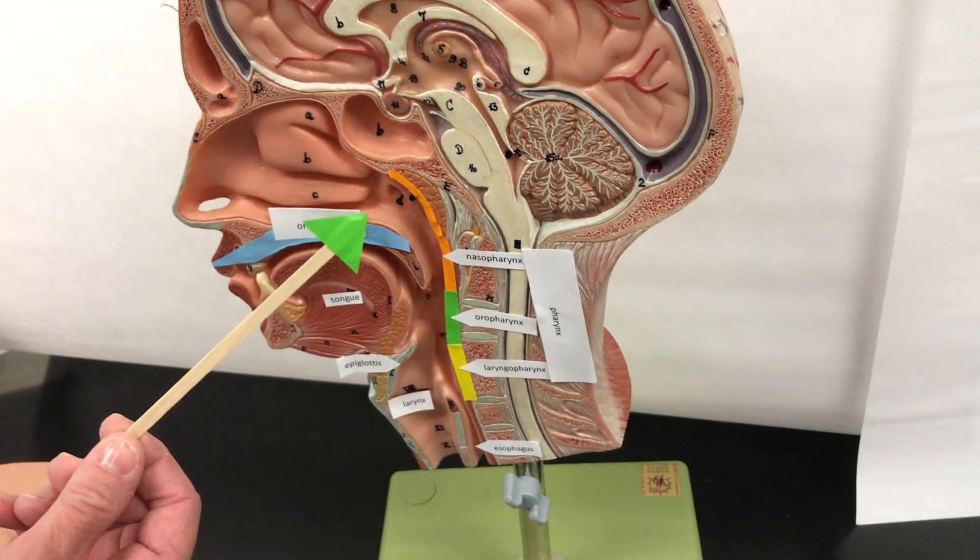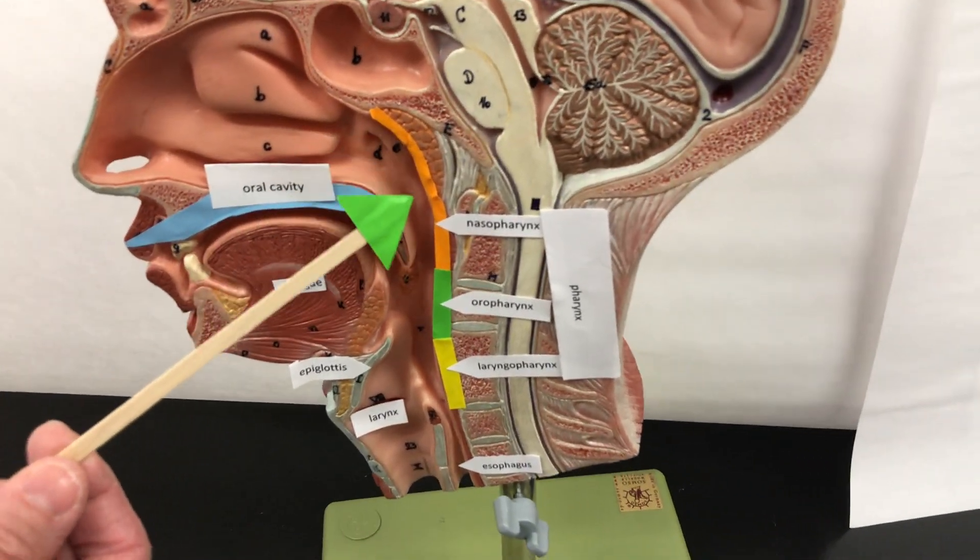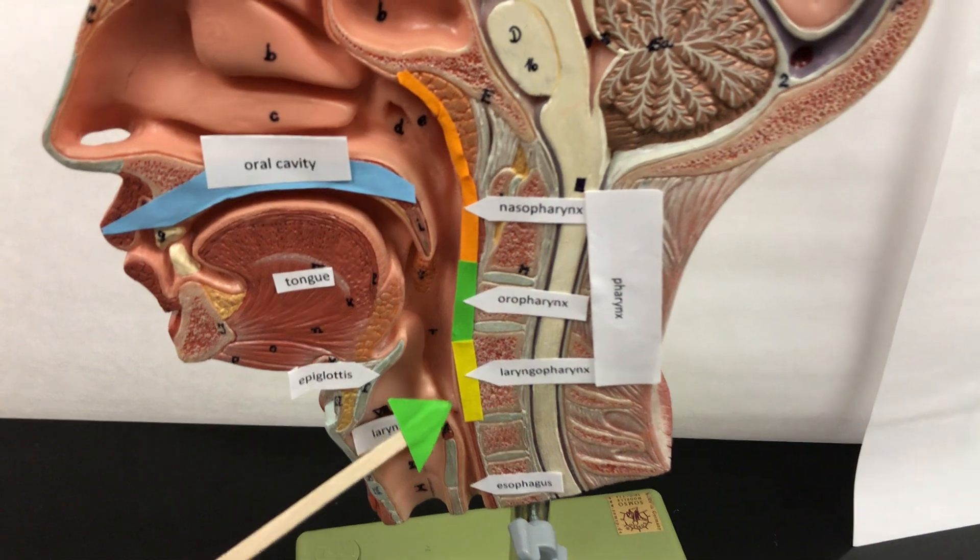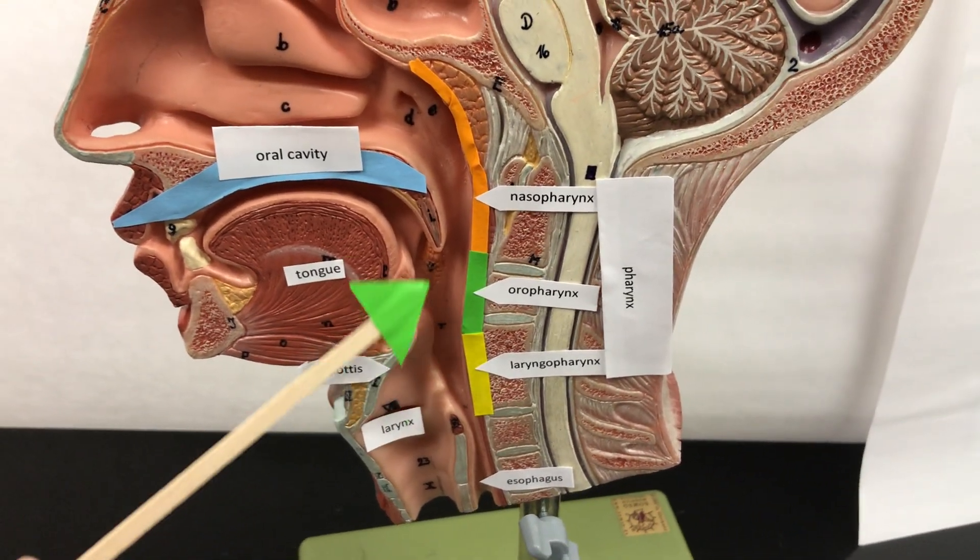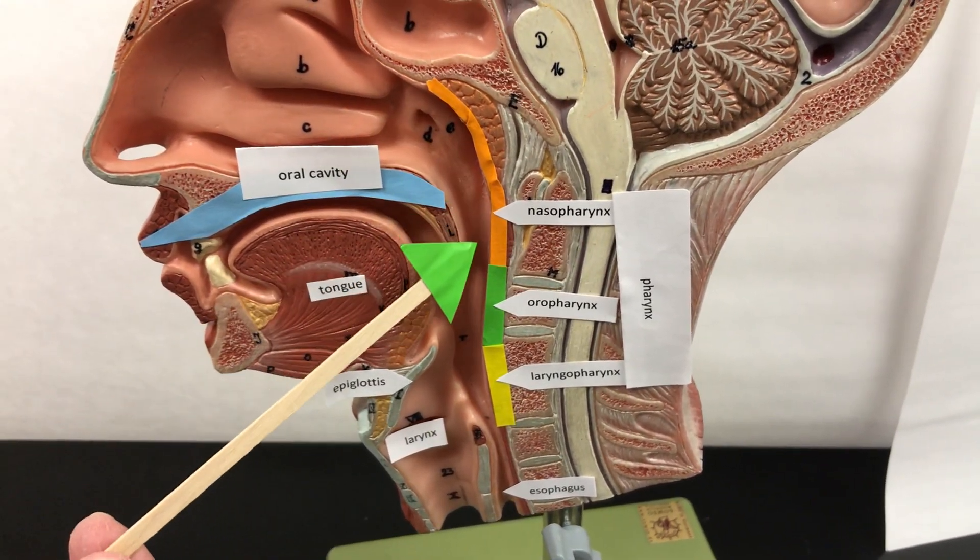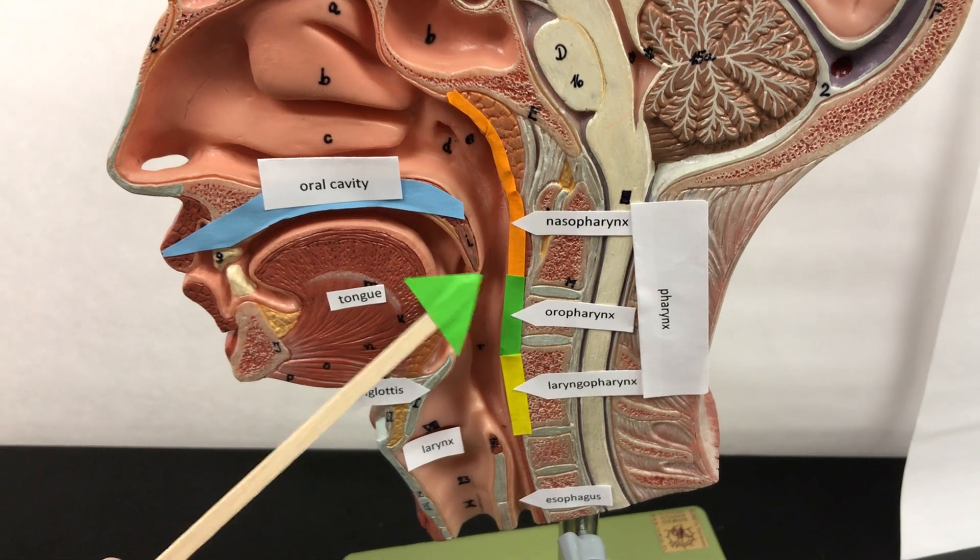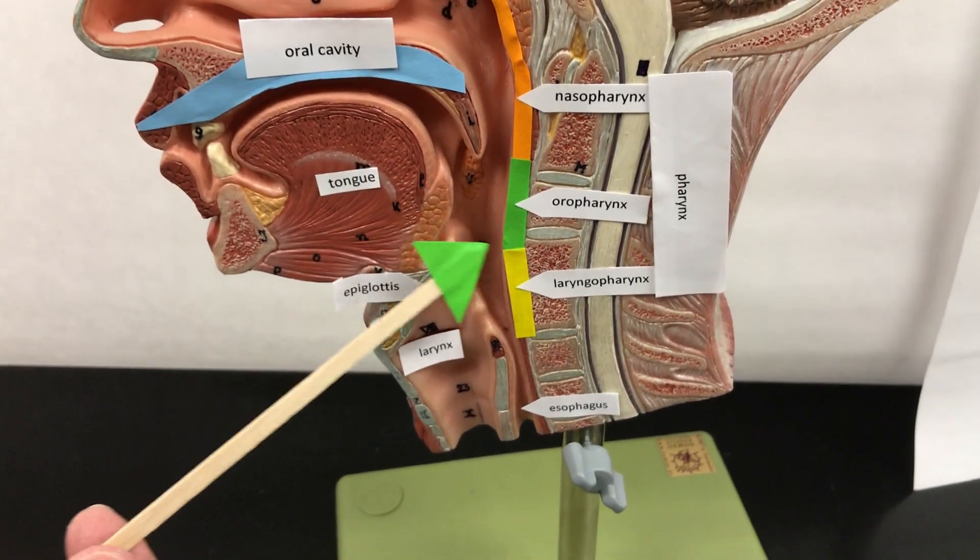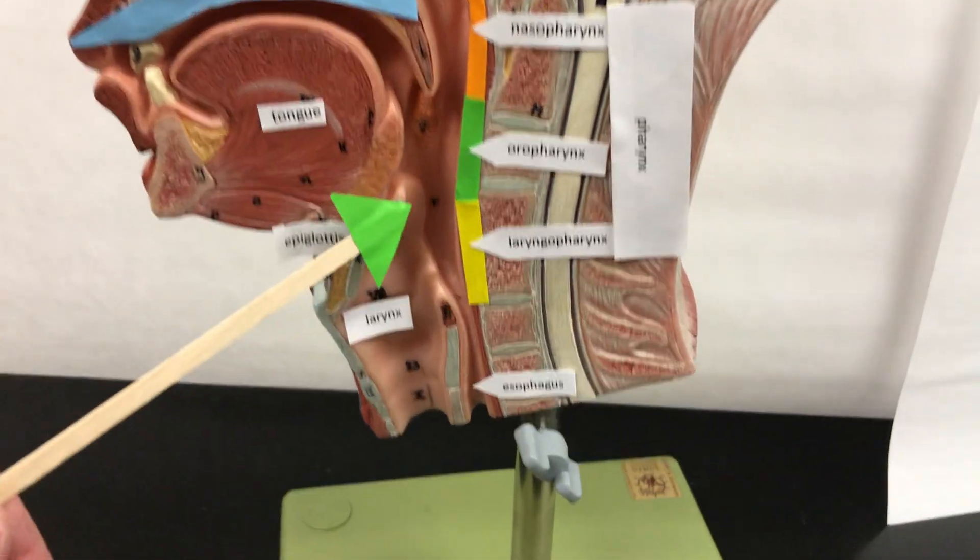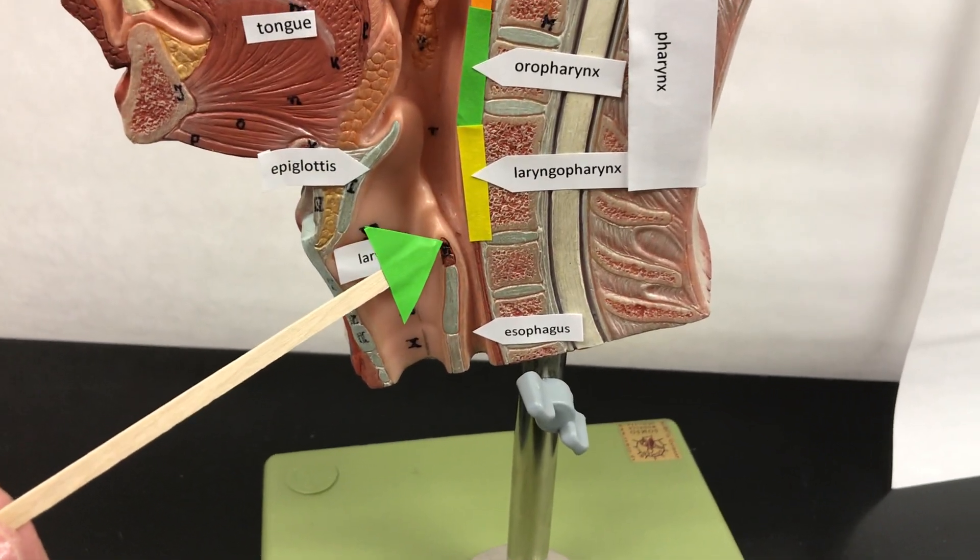The pharynx is commonly called the throat and it's used for both air and food. So the nasopharynx has air, the oropharynx is behind the mouth, and then the laryngopharynx is near the larynx.